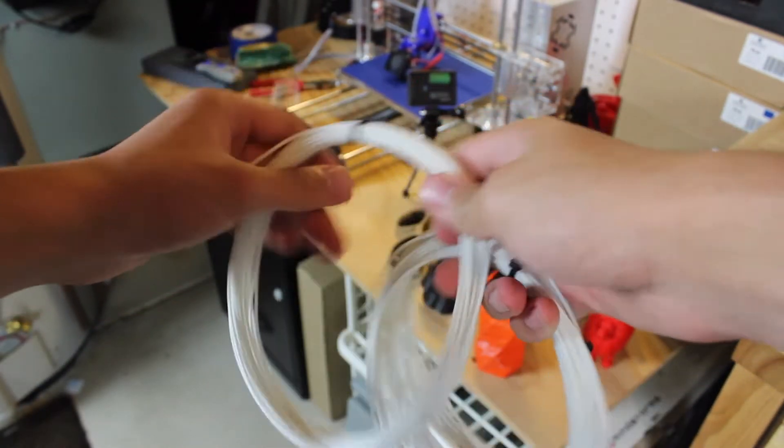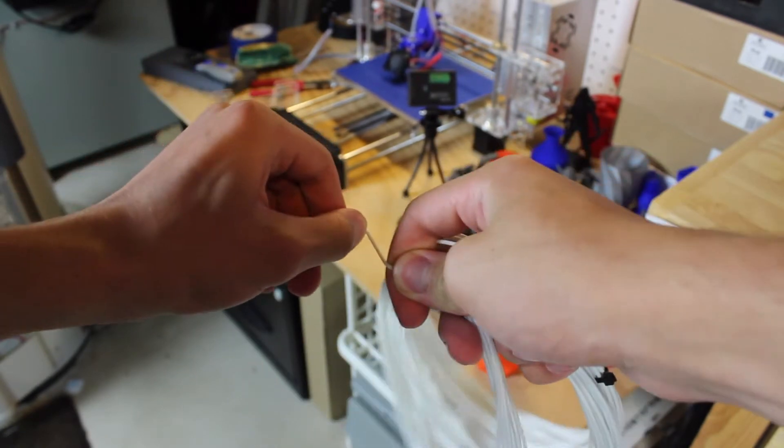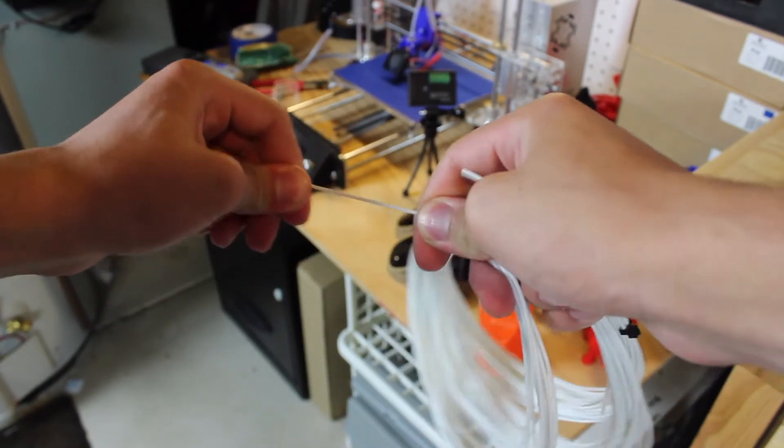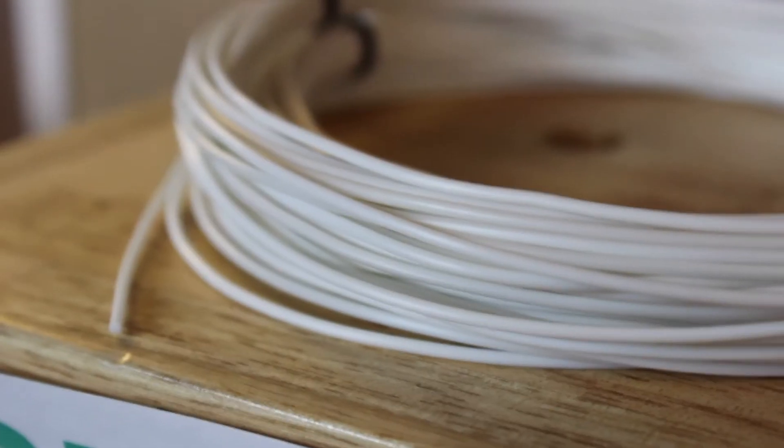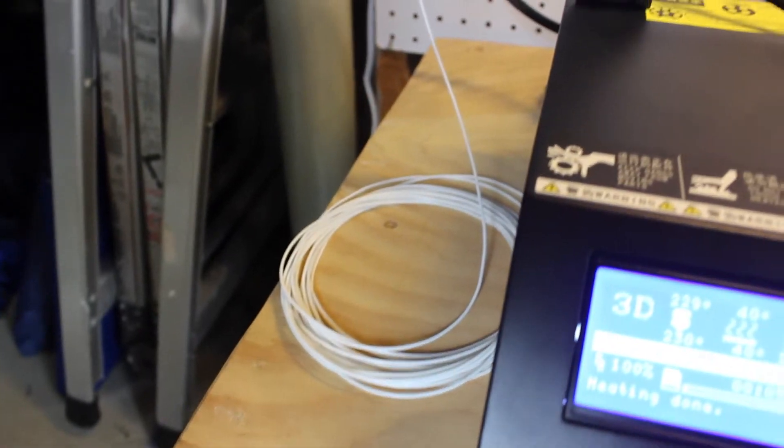So the Flex Mark 9 has a Shore hardness of 93. The print temp is around 225°C on the nozzle and 40°C on the bed. You can print this slower at around 35 millimeters per second which is still pretty high for a flexible filament. Also this is surprisingly easy to print with. I had zero nozzle jams.